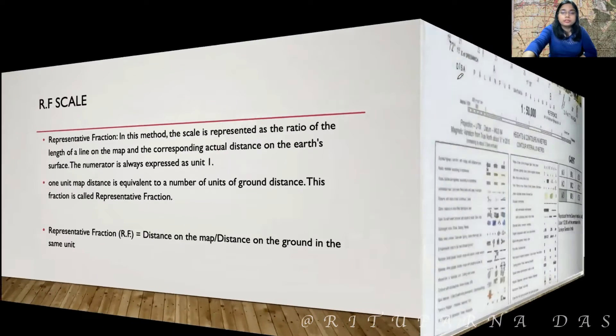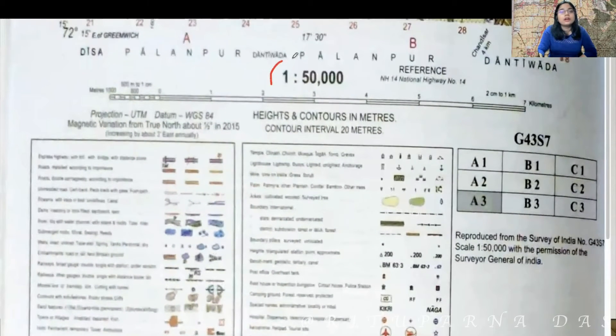In your topographical map, you can see it is written 1 is to 50,000. That will be your RF scale.